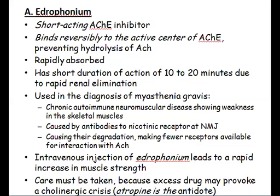Myasthenia gravis is an autoimmune disease caused by the production of antibodies that act at the nicotinic receptors present at the neuromuscular junction. It is an autoimmune neuromuscular disease that causes degradation of the nicotinic receptors at the neuromuscular junction, making them few. When acetylcholine is present at high concentration with few receptors, the muscle shows weakness.